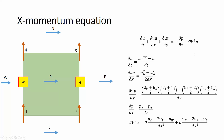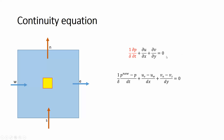The last term is the viscous term: ν times the Laplacian of U velocity, which is ∂²u/∂x² + ∂²u/∂y². Using a second-order central difference, this can be written in terms of U at five surrounding points. That completes the X momentum equation. The Y momentum equation is very similar — the convection and viscous terms are just in terms of V rather than U.